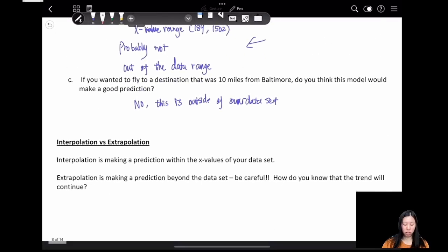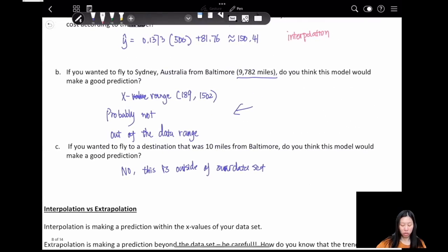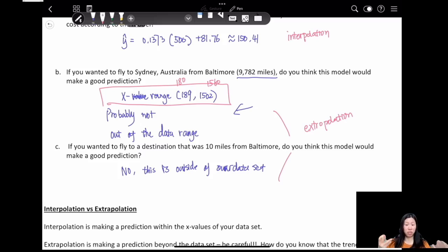But what is extrapolation? Extrapolation is making a prediction that's beyond the data set. How do you know that the trend will continue? These two examples are extrapolation, so that means we shouldn't use our predicted model. But be careful - we know the x range of the data set we collected is from 189 to 1502. That means even though it's a little bit out of the range, we'll still consider it a good model to predict. Such as if you fly to a destination at 180 miles, that's close enough - we can still use the same model to predict it. If we fly to someplace at 1516, this is still a good model. But if it's way far away like 9,000 miles, I don't want to use that model because the trend might be discontinued.